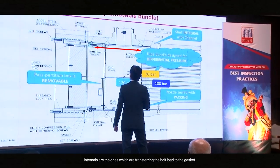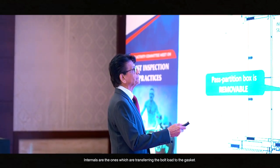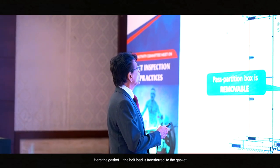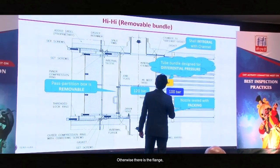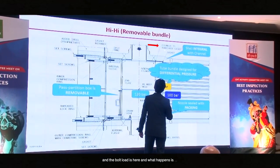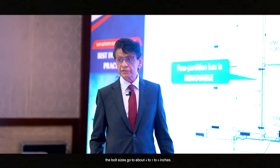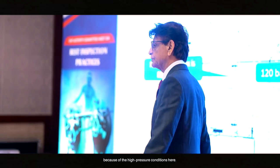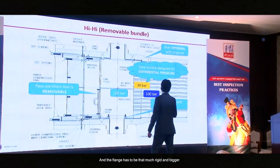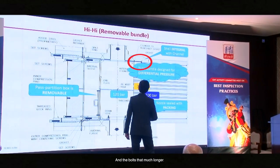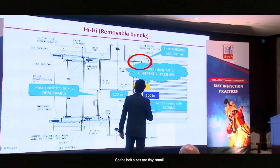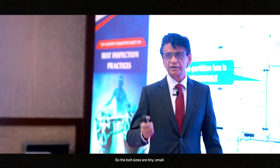The internals are the ones which are transferring the bolt load to the gasket. The bolt load is transferred to the gasket because it goes right at the center of the gasket. Otherwise, if there is a flange, the bolt load is offset. What happens is the bolt sizes go to about 4 inches, 5 inches, 6 inches because of the high pressure conditions, and the flange has to be that much bigger and rigid. Here, the load is right at the center, so both sides are tiny and small.